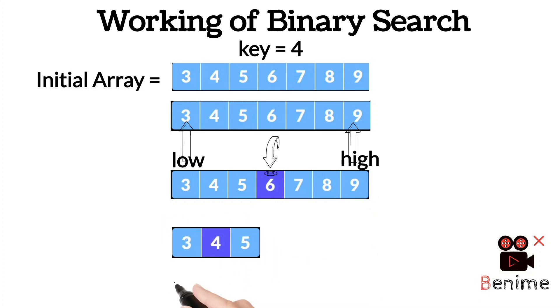We check if the key element is less than the mid element, so the high value is moved next to 6. We get the array 3, 4, 5. Now 3 is the low value and 5 is the high value. The middle element is 4. We compare the middle element with the key element - they are equal, so the key is found.